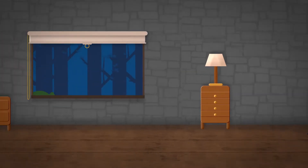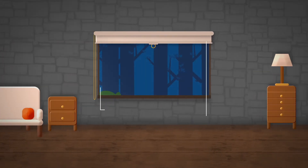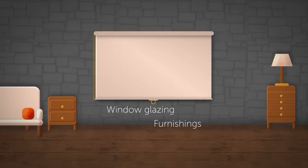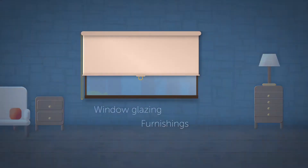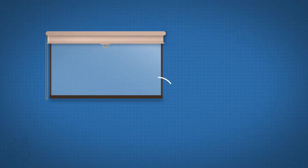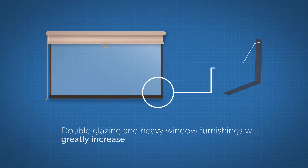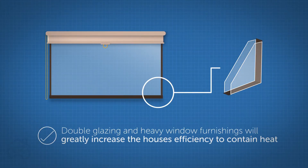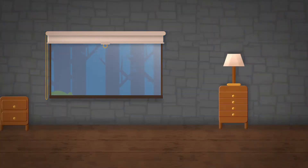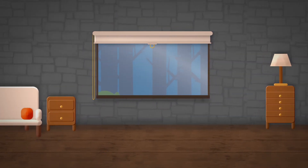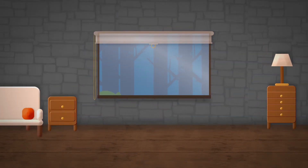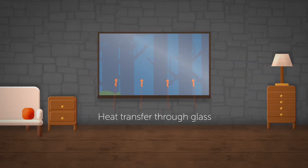Window glazing and furnishings are also important to calculate the amount of heat loss from the dwelling. Double glazing and heavy window furnishings will greatly increase the house's efficiency to contain heat. Windows without curtains or blinds will leak warmth via heat transfer through the glass.